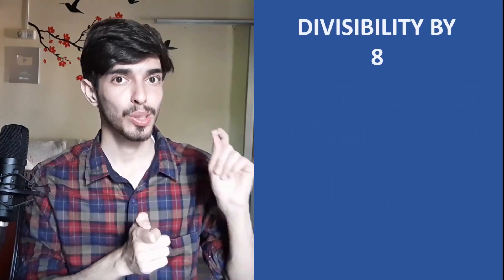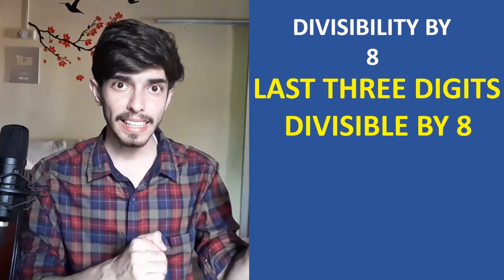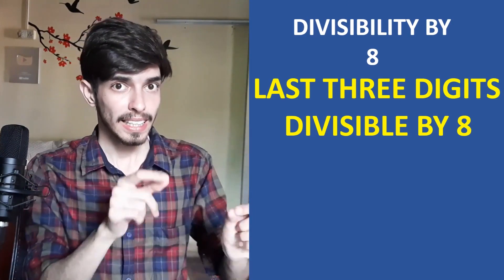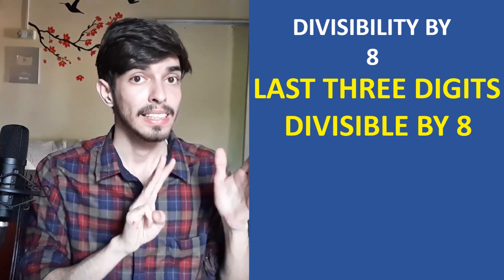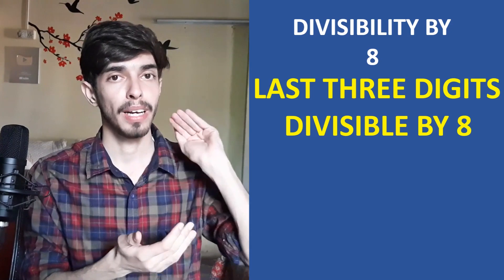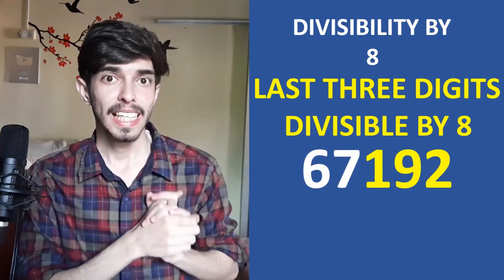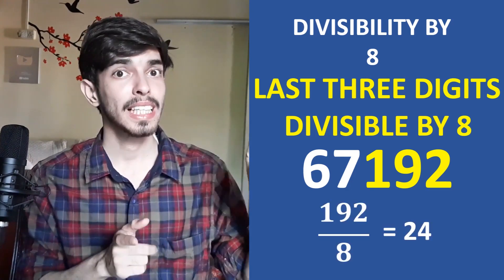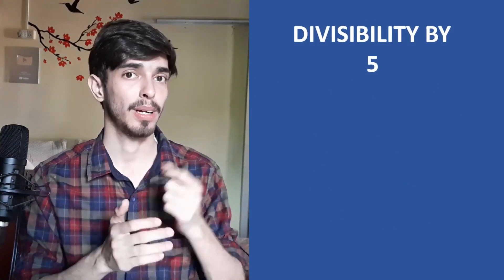A similar test applies for 8: if the last 3 digits are divisible by 8, then the whole number is also divisible by 8. For example, is 67192 divisible by 8? Take the last 3 digits — 192 — divide by 8: yes, it is divisible. So 67192 is also divisible by 8, and therefore not a prime number.